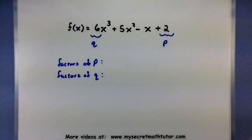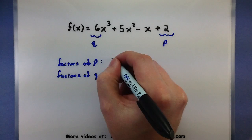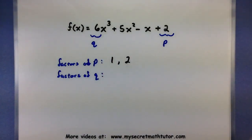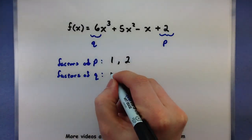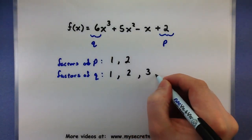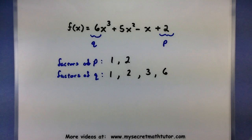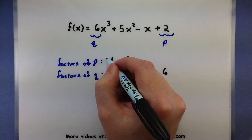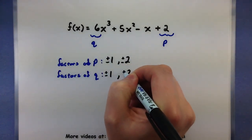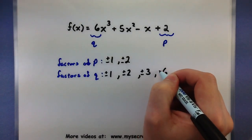Alright, so let's just list out everything that could divide evenly into 2. Well, there's not a whole lot. 1 could go in there, and also 2. So those are the only two things that divide evenly into 2. Let's see, when it comes to 6, 1 could go in there, 2 could go in there, 3, and 6. So there's a lot more things that could go into q. Also you want to consider the positive and the negative values of each of these. I tend not to worry about these until I actually start building my fractions, but it is good to note them now.